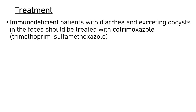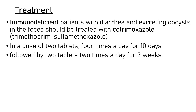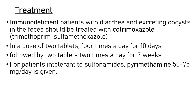For treatment of isosporiasis, cotrimoxazole (trimethoprim-sulfamethoxazole) is administered — two tablets, four times a day for 10 days. If symptoms continue, follow up with two tablets twice a day for three weeks. Patients intolerant to sulfonamides can be given pyrimethamine at 50 to 75 milligrams per day.